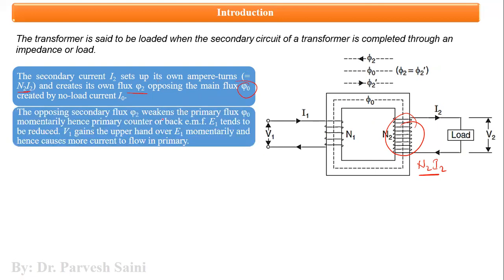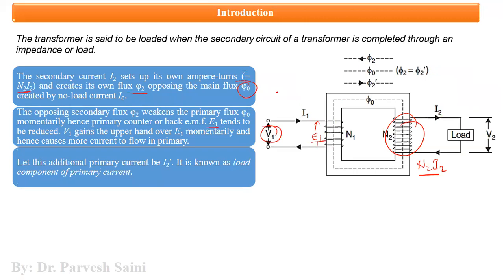This opposing flux weakens the main flux, which in turn reduces the primary EMF e1. As a result, v1 becomes greater than e1, and this causes more current to flow into the primary winding. This additional current — beyond the rated no-load current — is called i2-dash, the load component of the primary current.